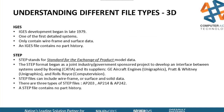3D file types: IGES is pretty popular and has been around since 1979 — one of the first file types containing wireframe or surface data. When I point out that there's no part history, what I mean is that you're not going to have anything except what I call a dumb solid. It's going to come in without a feature tree — you're just going to have a solid.